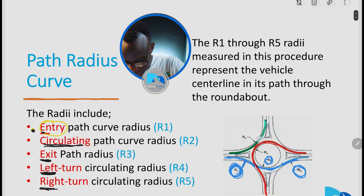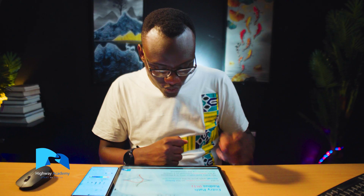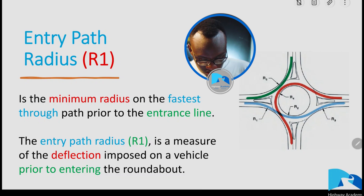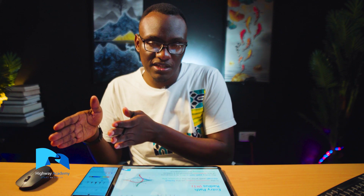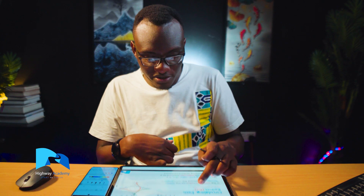R1 is the measure of deflection for vehicles entering into the roundabout, as shown here. This deflection will give us a certain speed — I'll show you how to calculate this in Excel in the next lesson. For example, if you have a radius of 30 meters or 100 feet, what's the speed? R2 is an offset from the central island, for vehicles circulating around the roundabout. R3 is for exiting the roundabout.